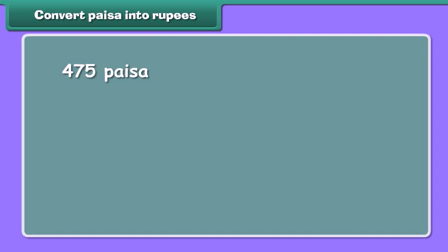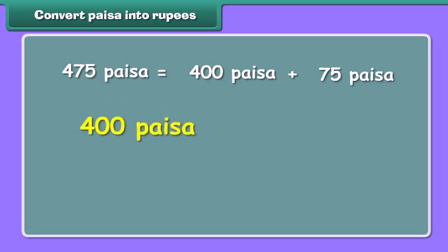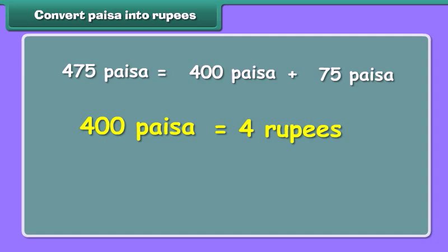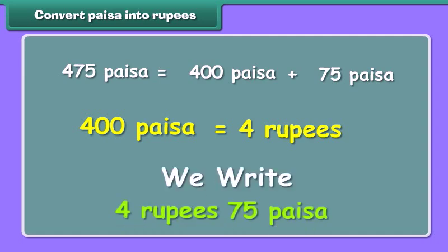It's time to convert paisa into rupees. 475 paisa is equal to 400 paisa plus 75 paisa. As we know, 400 paisa is equal to 4 rupees. Therefore, we can write it as 4 rupees and 75 paisa.